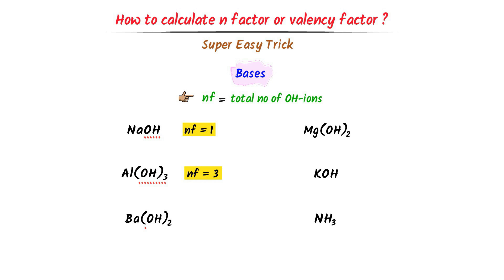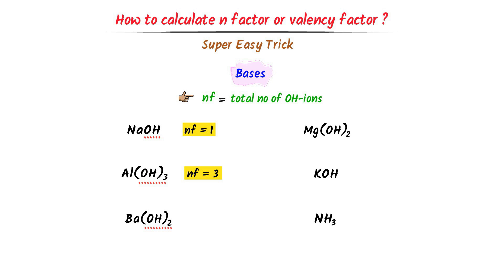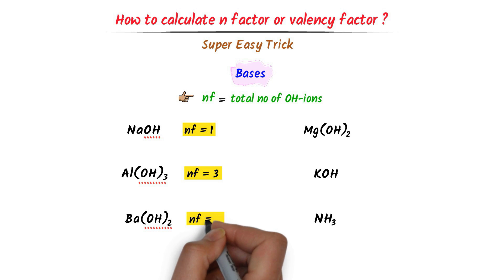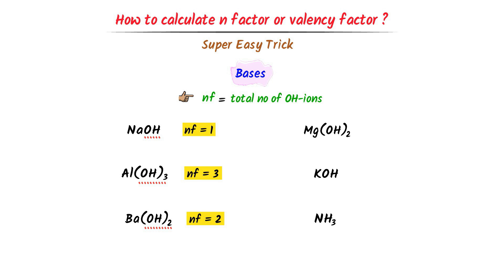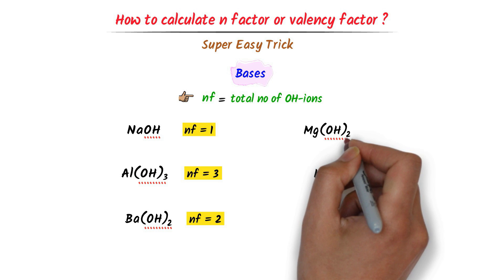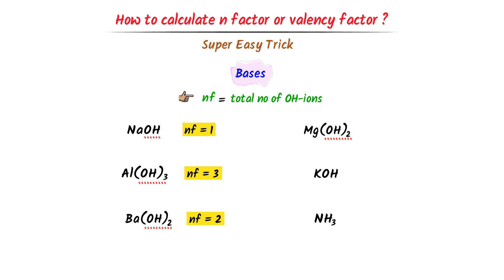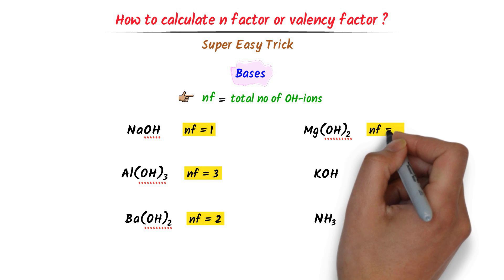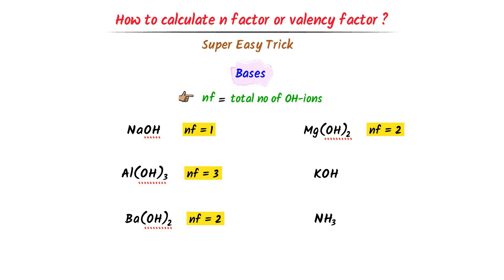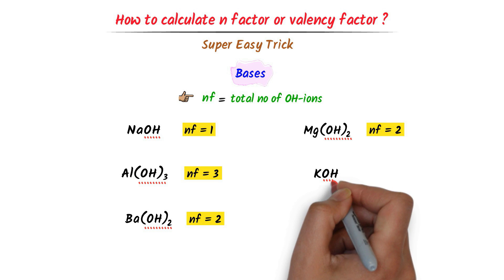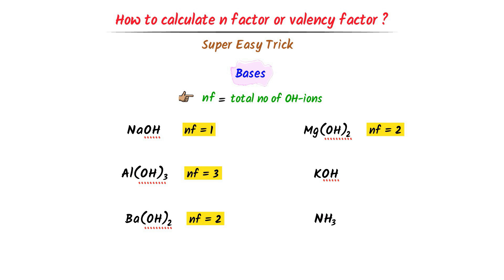In case of barium hydroxide, there are 2 hydroxide ions, so its n-factor is 2. In case of magnesium hydroxide, there are 2 hydroxide ions, so its n-factor is 2. In case of potassium hydroxide, there is 1 hydroxide ion, so its n-factor is 1.